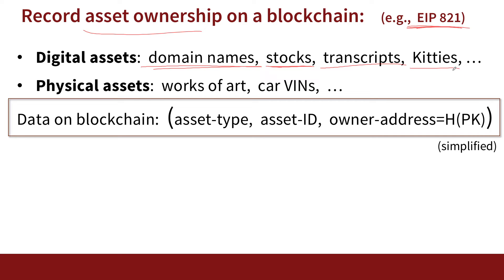We already talked about maintaining identities on the blockchain. Physical assets could also be tracked on the blockchain. For example, if you buy a work of art — a one-of-a-kind work of art — if you record the work of art on the blockchain, you can basically have the entire provenance chain of the work of art to see exactly how it was transferred from owner to owner. That's all recorded on the blockchain, so forgeries become much, much harder.